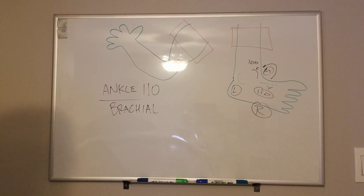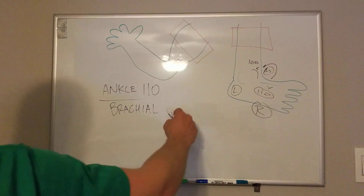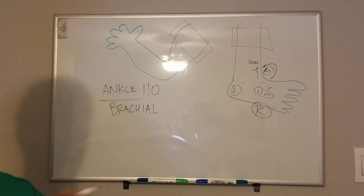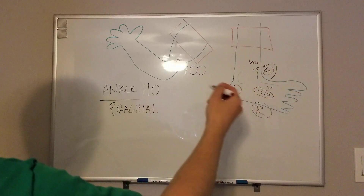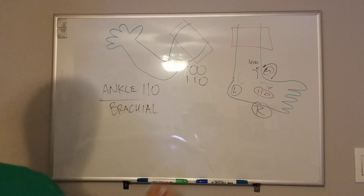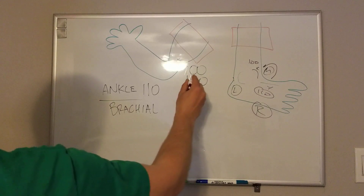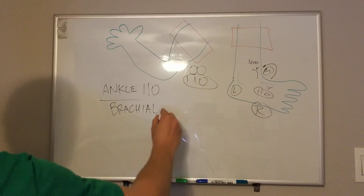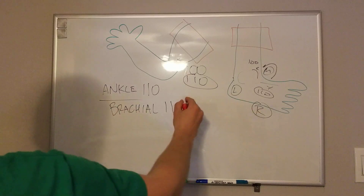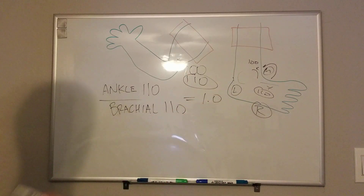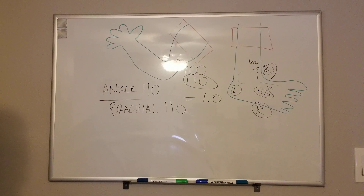Let's say the brachial pressure is 100 on one side and 110 on the contralateral side. Remember our phrase — we're going to use the higher of the two arms, which is 110. So you calculate this out: 110 divided by 110, and that equals a perfect 1.0. In theory, that should be normal, because your systemic blood pressure should be the same throughout your body — it's maintained in this closed system.